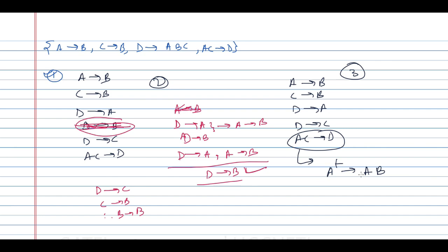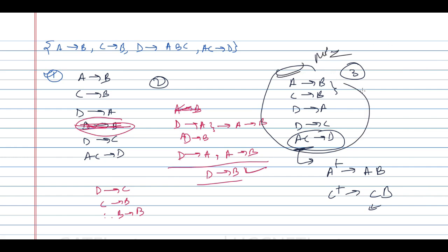A-closure gives A and B; C-closure gives C and B, but does not contain A, so we cannot remove either attribute from AC→D. Checking for transitive functional dependencies — there are none remaining. Therefore this is the minimal set: {A→B, C→B, D→A, D→C, AC→D}. You cannot minimize it any further.